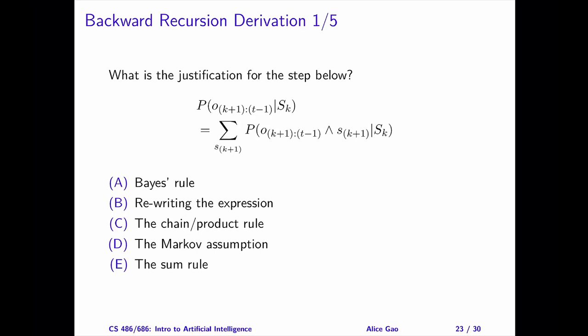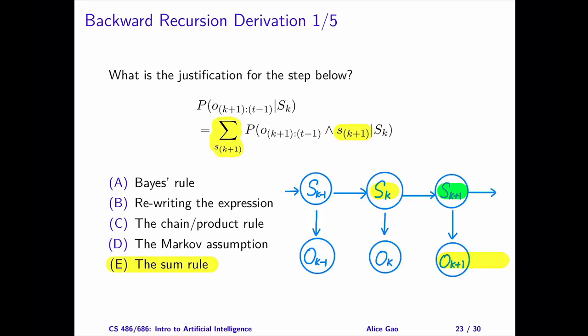Step 1. Pause the video and choose an answer. The correct answer is E, the sum rule. We use the sum rule to introduce the state on day k plus 1, s sub k plus 1. Introducing s sub k plus 1 is convenient since it is a bridge between the state on day k, s sub k, and the observations from day k plus 1 onward.